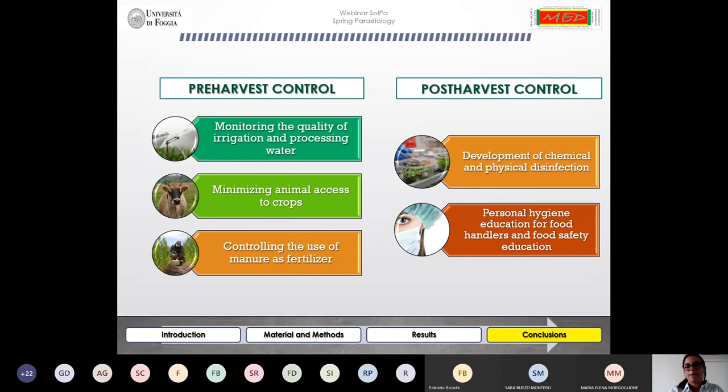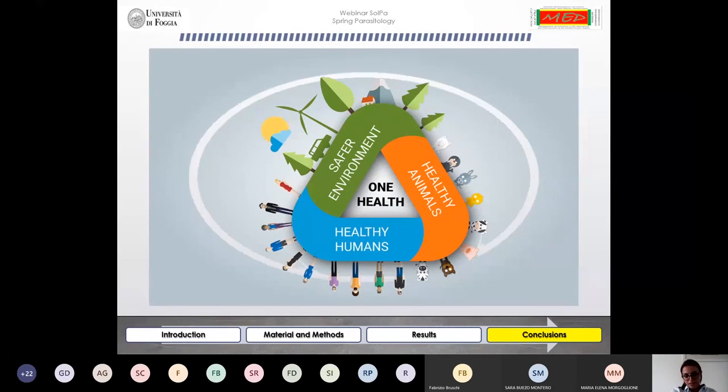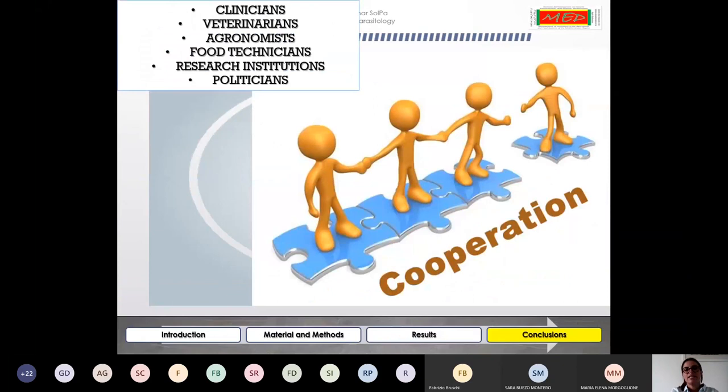In the meantime, what can we do? Of course, we can try what is in our power to prevent or at least reduce contamination in fresh produce. We can act in the pre-harvest and in the post-harvest phase with controls such as monitoring the quality of irrigation and processing water, minimizing animal access to crops, controlling the use of manure as fertilizer, development of chemical and physical disinfection, and last but not least, encourage personal hygiene education and food safety education for food handlers. Also, it is crucial to implement the One Health approach and seek cooperation among different professions to preserve public health.